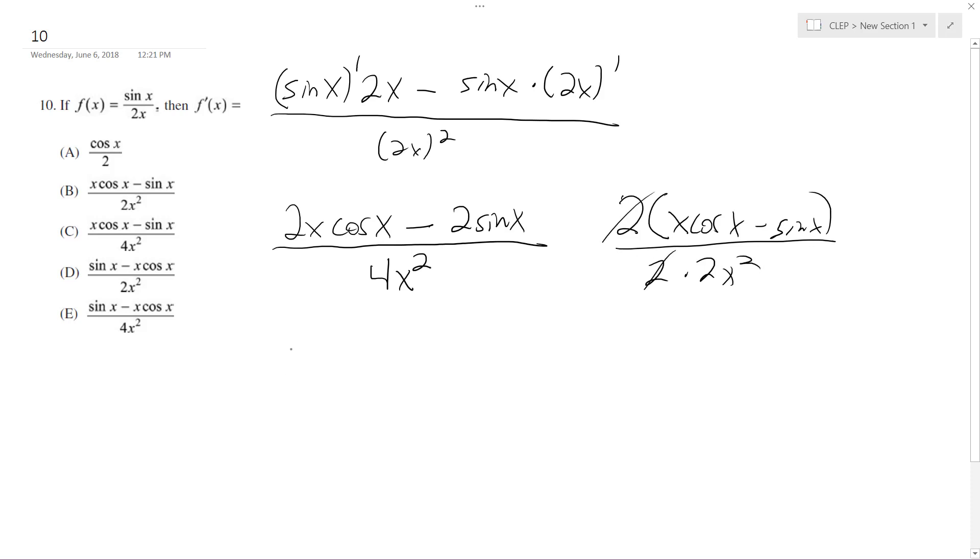and finally we're left with (x cosine x minus sine of x) over 2x squared. And that matches up with option B.